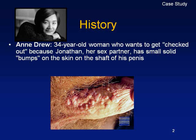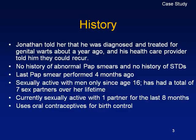We have a 34-year-old woman who wants to get checked out because her sex partner has small solid bumps on the skin — on the shaft of the penis — a typical genital wart. In her history, he was diagnosed and treated for genital warts about a year ago, and his healthcare provider told him they could recur.